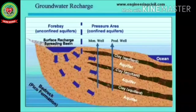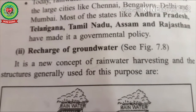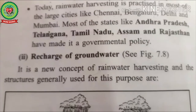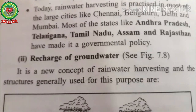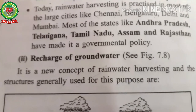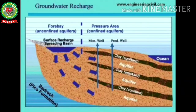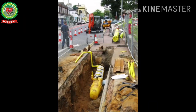Our next topic is groundwater recharge. Groundwater recharge is a process through which water enters an aquifer. It is a new concept of rainwater harvesting, and the structures — places where rainwater is stored and drained to the aquifer — generally used for this purpose include recharge pits, trenches, dug wells, and hand pumps.